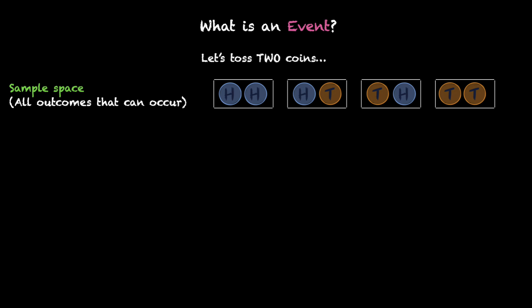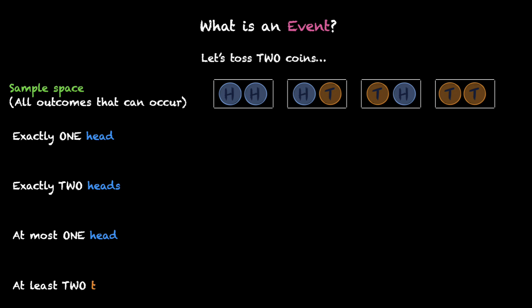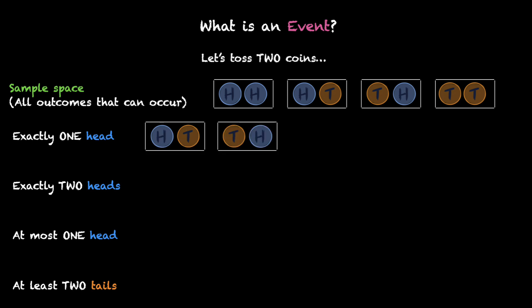Now let's get creative. Suppose we want to understand how do we get these scenarios — how do we get exactly one head, how do we get exactly two heads, at most one head or at least two tails? We can get exactly one head by either having the first coin as heads or the second coin as heads. Now how do we get exactly two heads? There's only one way: both of them have to be heads.